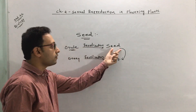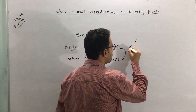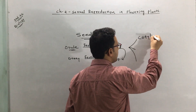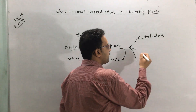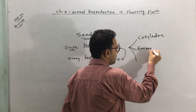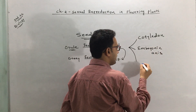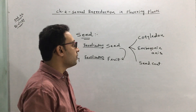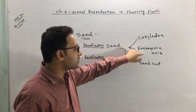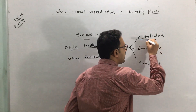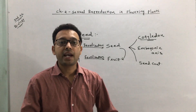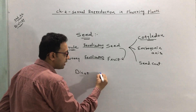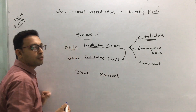Now, what are the components of a seed? Usually the seed contains three components: first, cotyledon; second, embryonic axis; and third, seed coat. The cotyledon varies in number depending on the type of seed. There are two types of seeds: dicot seed (dicotyledonous), which has two cotyledons, and monocot seed (monocotyledonous), which has one or single cotyledon.